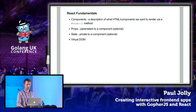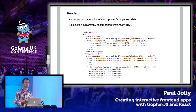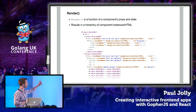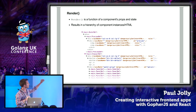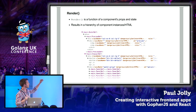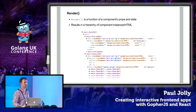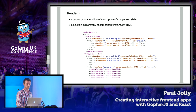How do these components describe what should be rendered? Via the render method, which ends up being a pure function of a component's props and state, resulting in a hierarchy of components and HTML. The outer component within its render function renders a div, and that div contains a preview component and a chooser component. The preview component in its render function renders some nested divs, some images, et cetera. And if you right-click on a page in Chrome and say Inspect, you'll be very familiar with this sort of structure.